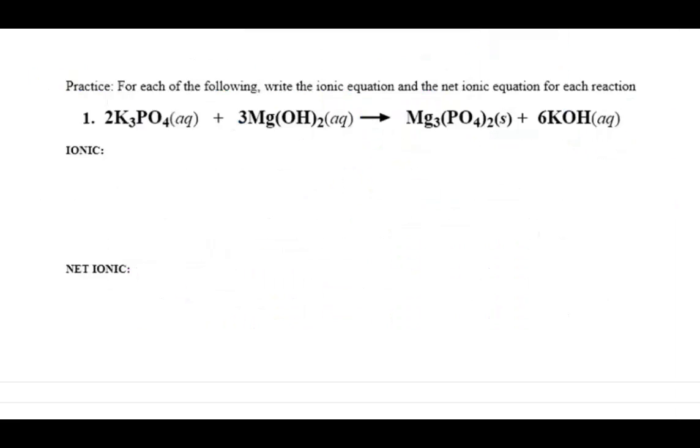This next reaction is important in terms of keeping straight both coefficients and subscripts within the same compound. Each aqueous potassium phosphate has three potassium ions and one phosphate ion. And the coefficient for potassium phosphate is two.